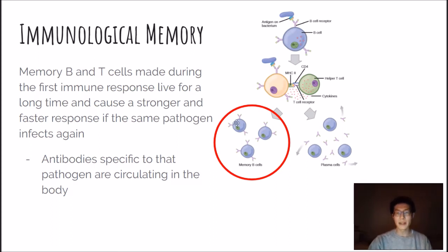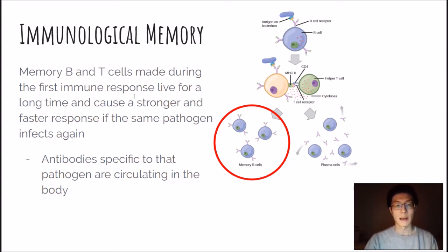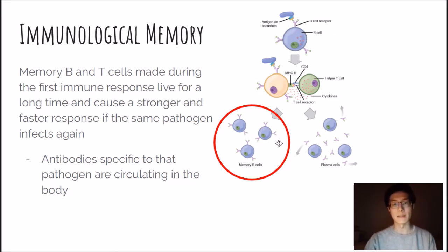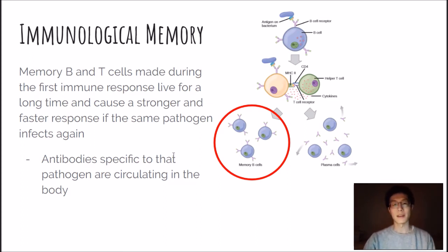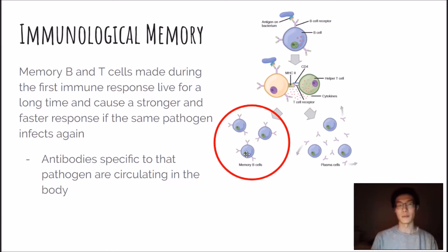Memory B cells and T cells are made during the first immune response. They live for a long time and cause a stronger, faster response if the same pathogen infects again. So if your body gets infected with the same virus a few years later, your body will recognize it and use those memory B cells to mount a faster response.